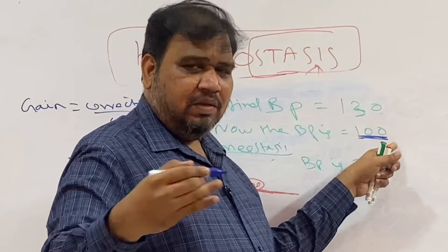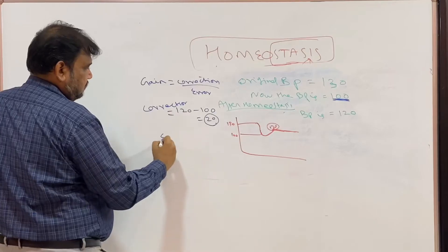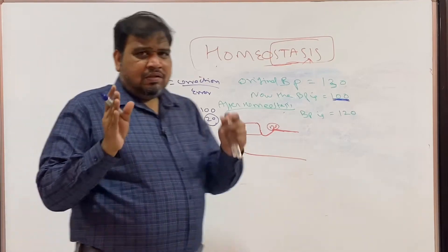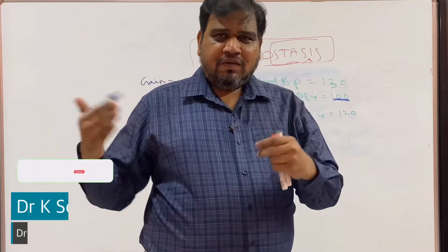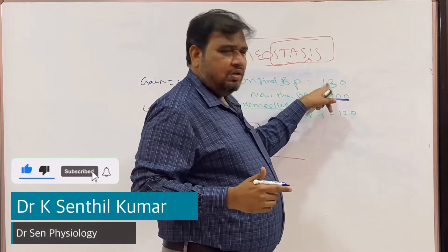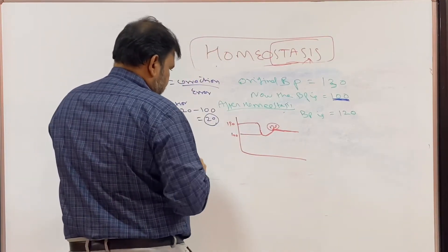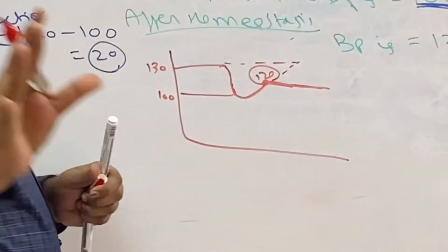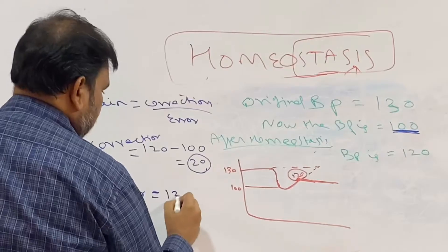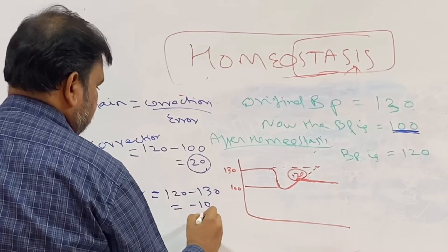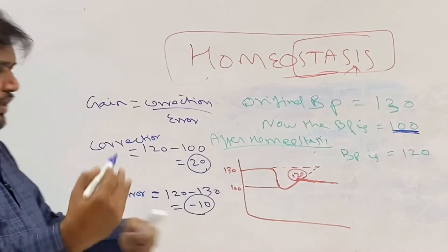Now coming to error. Error is: if homeostasis had occurred perfectly, the BP would have come back to normal. Homeostasis should maintain the normal environment — whatever has changed should return to normal. The initial BP was 130, so it was expected to come back to 130. But it came only to 120. So error equals 120 minus 130, which is minus 10. There is an error of minus 10.